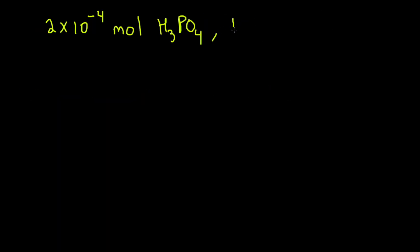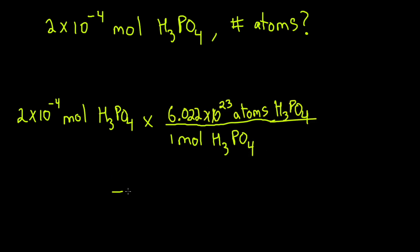If I am given moles and asked for number of atoms in 2 times 10 to the negative 4 moles of H3PO4, I start with what's given and multiply by Avogadro's number. One mole of H3PO4. Moles cancel with moles and we are left with atoms. Our final answer is 1.2 times 10 to the power of 20 atoms in this amount of H3PO4.